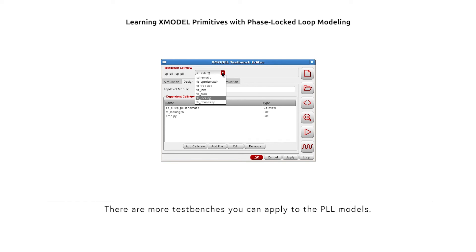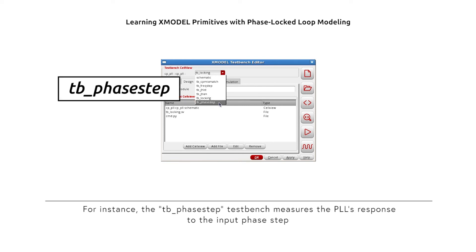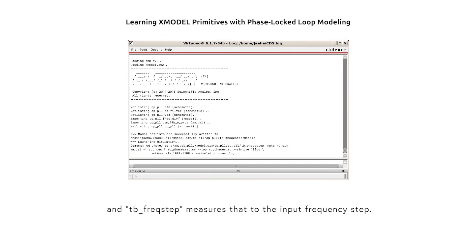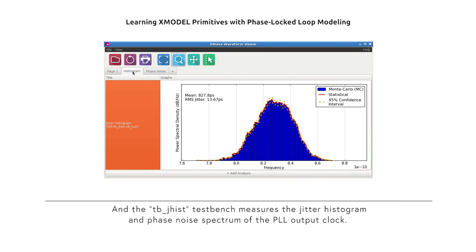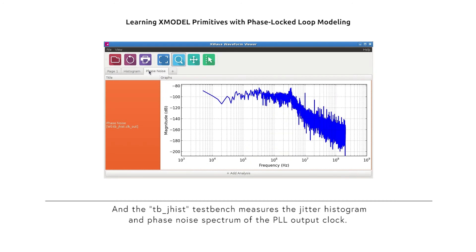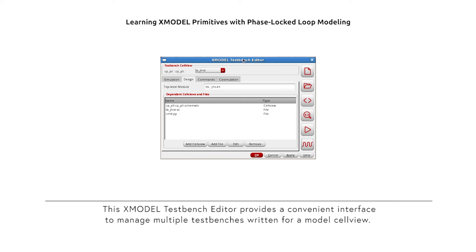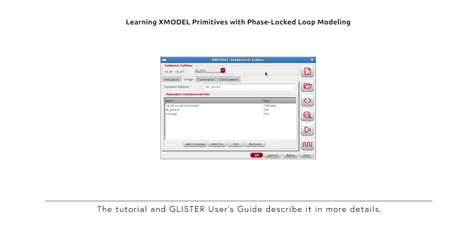There are more test benches you can apply to the PLL model. For instance, the TB_phase_step test bench measures the PLL response to the input phase step, and TB_frequency_step measures the response to the input frequency step. The TB_JHIS test bench measures the jitter histogram and phase noise spectrum of the PLL output clock. The X-Model test bench editor provides a convenient interface to manage multiple test benches written for a single model cell view. The tutorial and Glister user's guide describe it in more detail.